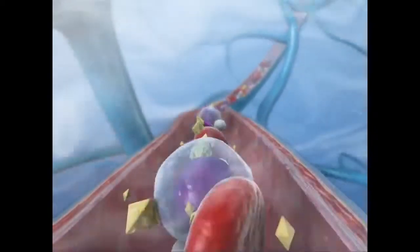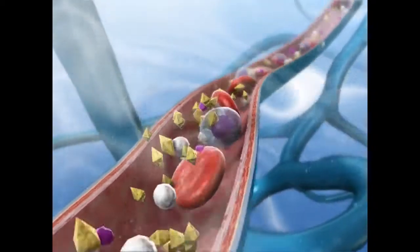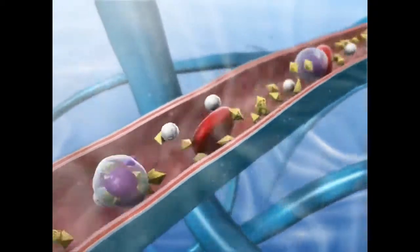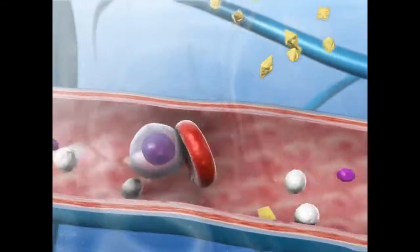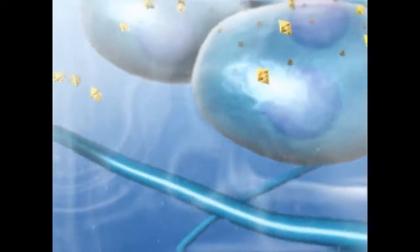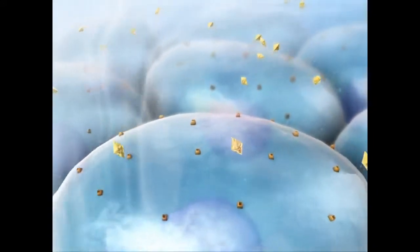Hormones travel through the bloodstream and come into contact with many cells. Each type of hormone affects only the behavior of specific targeted cells. A cell responds to a hormone only if it has receptors for that specific hormone.